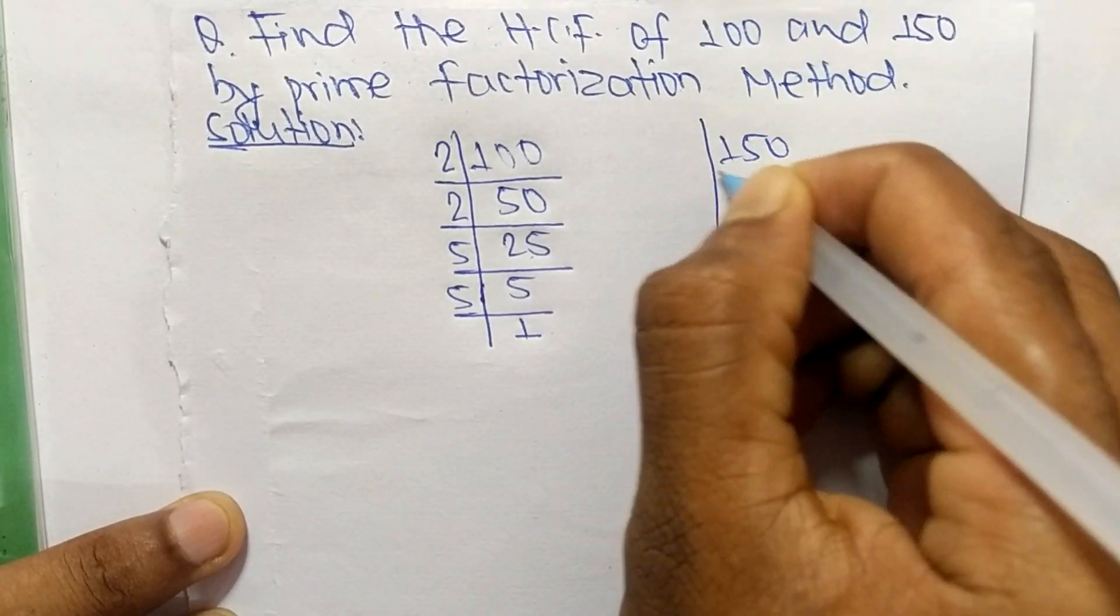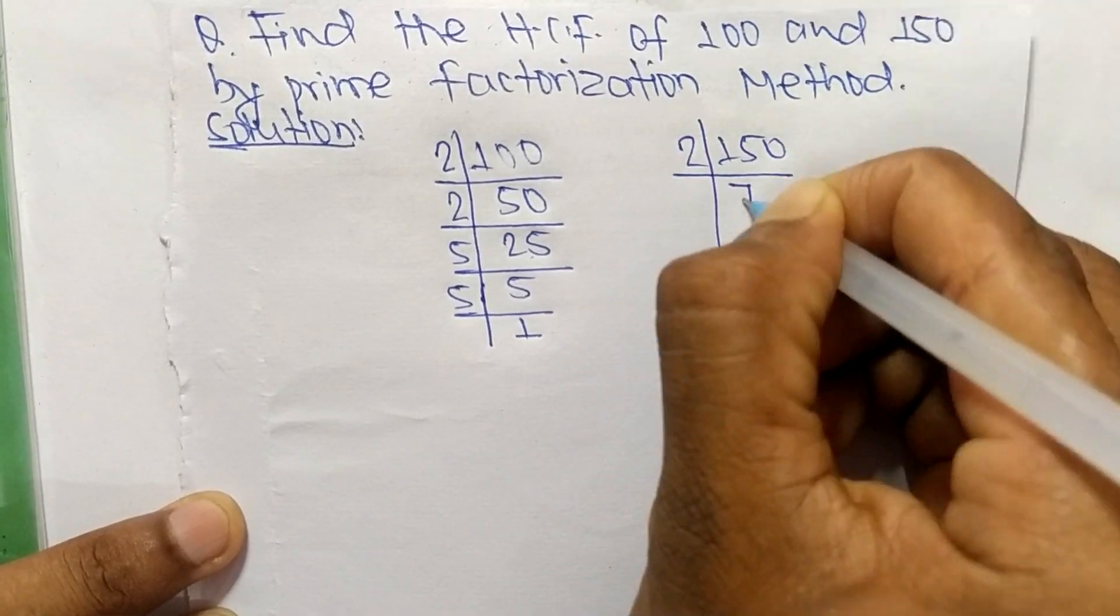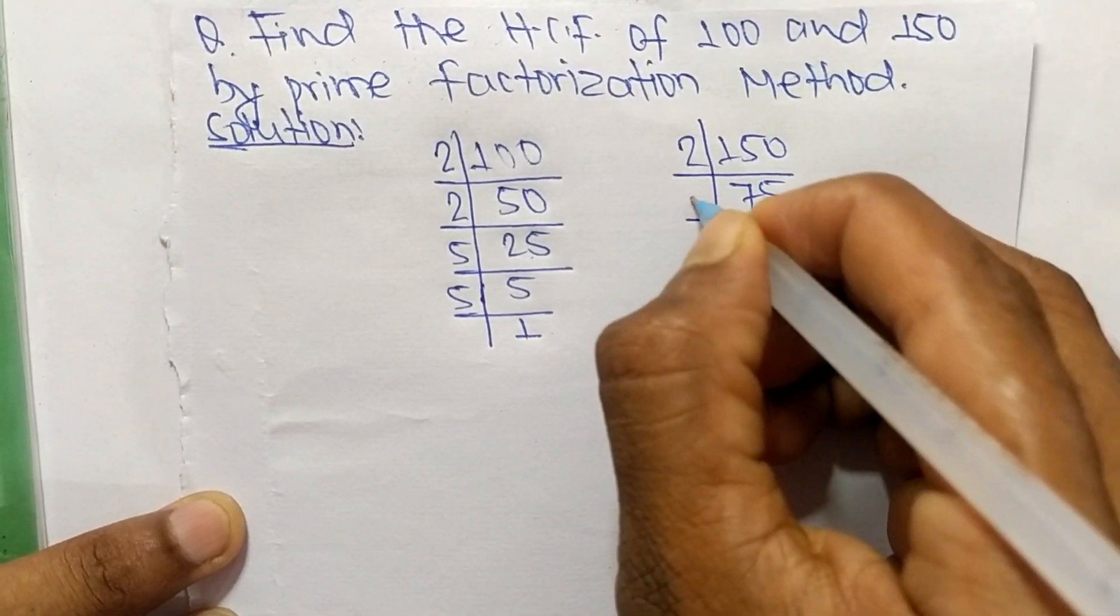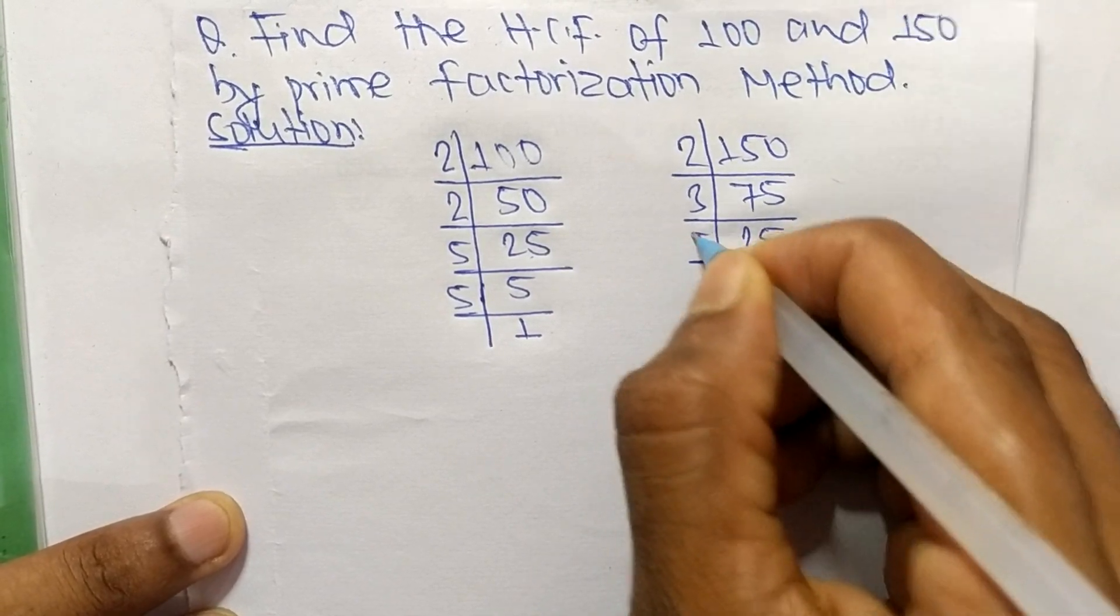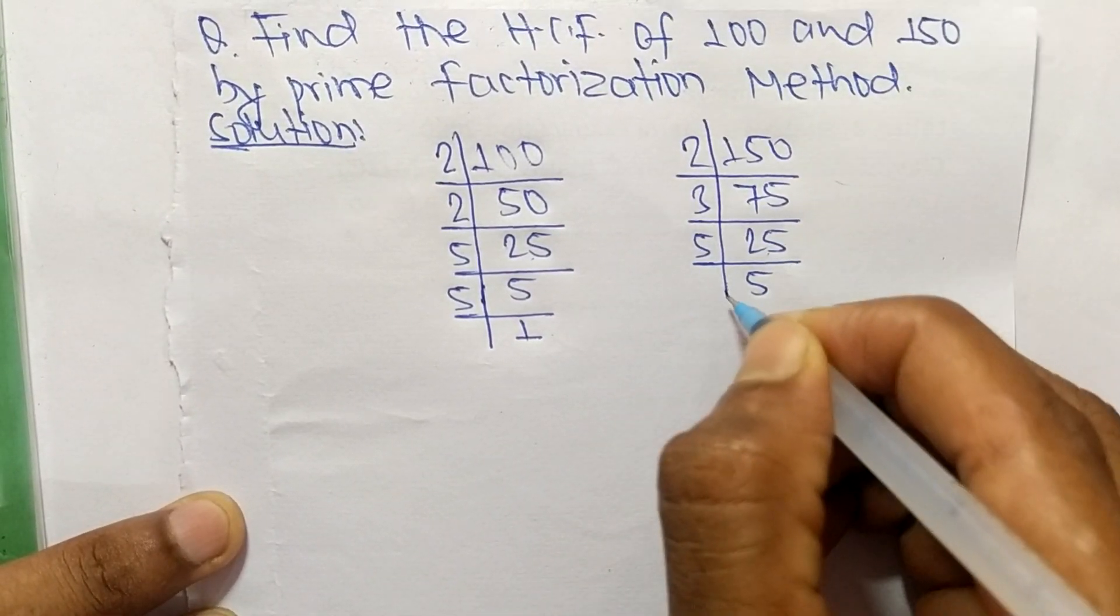The prime factors of 150 are: 2 times 75 equals 150, 3 times 25 equals 75, 5 times 5 equals 25, and 5 times 1 equals 5.